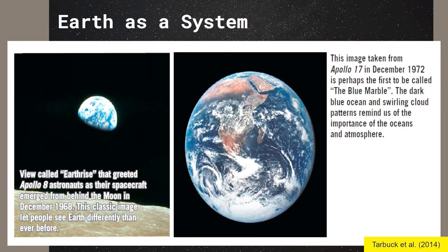These two are very famous images of our planet. The first one is called Earthrise, taken by the Apollo 8 astronauts in December 1968. This is a very classic image that let people on our planet see our planet differently. The second one was taken in December 1972 by Apollo 17, and it is called the Blue Marble, describing the swirling patterns of clouds in our atmosphere. These two are very important images because they remind us of how small and fragile our planet actually is, and the importance of the synergy and interactions of the different subsystems to ensure the survival of life on our planet.